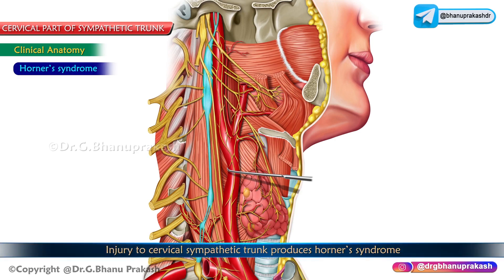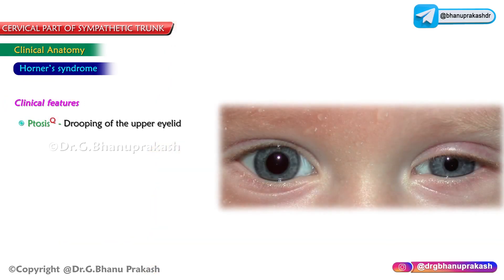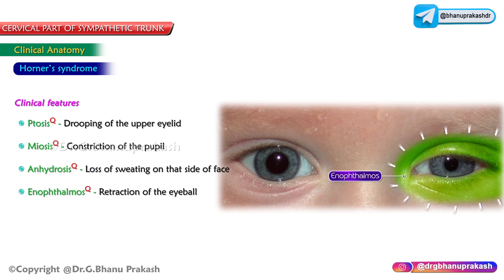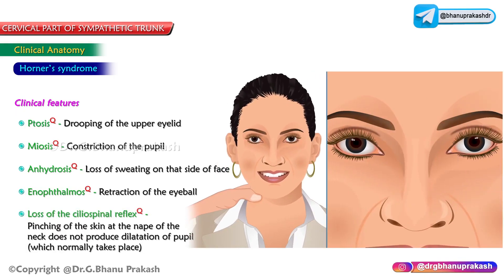Injury to the cervical part of the sympathetic trunk produces Horner's syndrome, characterized by ptosis (drooping of the upper eyelid), miosis (constriction of the pupil), anhydrosis (loss of sweating on the unilateral side of the affected face), and enophthalmos with retraction of the eyeball.